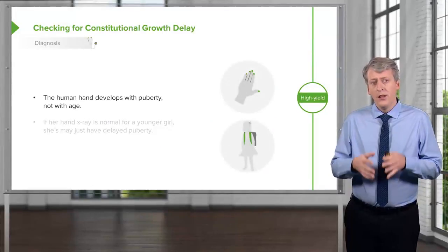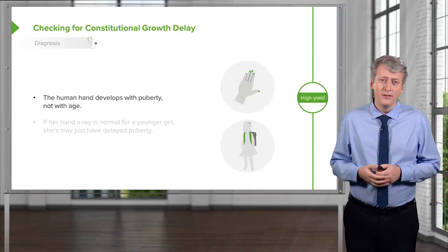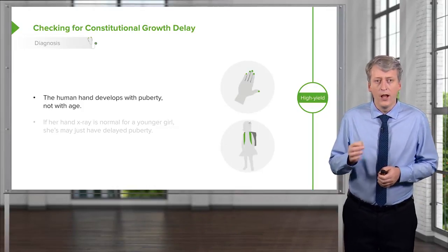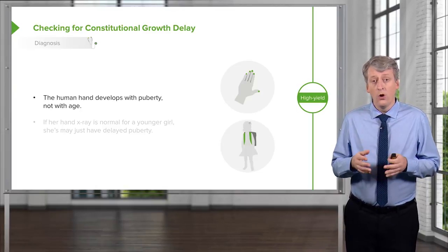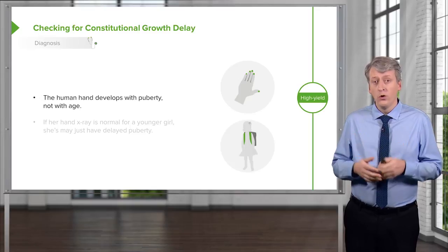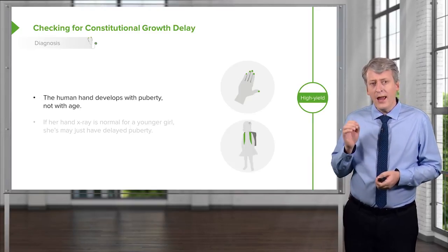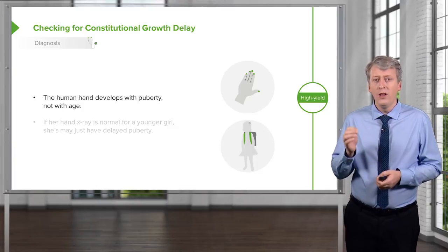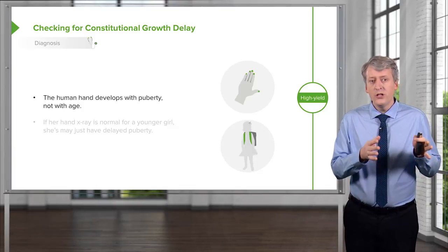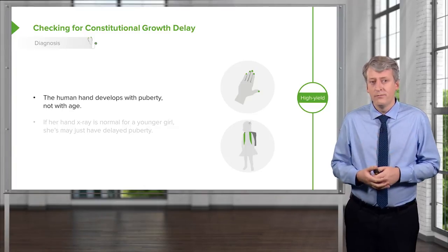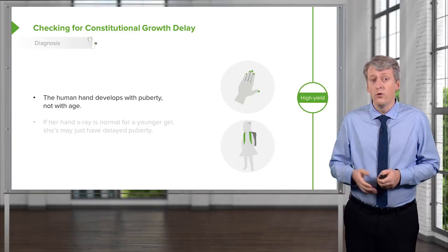There is a way we can delve into this and it has to do with the hand. The human hand develops with puberty, not with age. So when we're ready to have our growth spurt, our hand starts developing. If her hand x-ray has a normal age for a younger girl, she just hasn't grown yet. She may have delayed puberty and a delayed growth spurt.